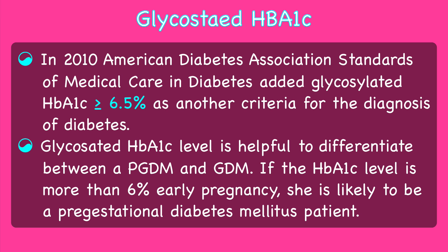In 2010, the American Diabetes Association standards of medical care in diabetes added glycosylated hemoglobin A1c greater than or equal to 6.5% as another criteria for diagnosis of GDM. Glycosylated hemoglobin A1c level is helpful to differentiate between PGDM and GDM. If the level is more than 6% early in pregnancy, she is likely to be a PGDM patient.